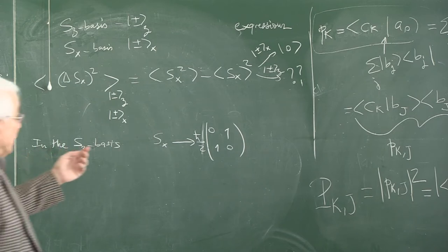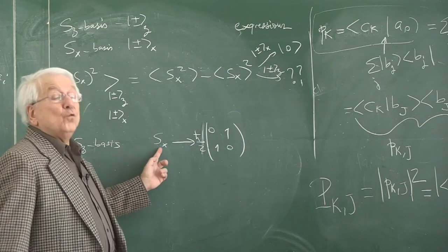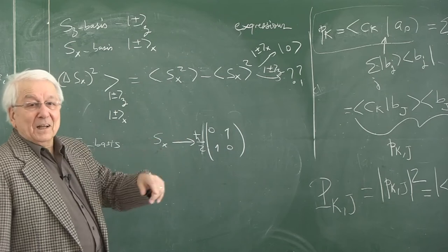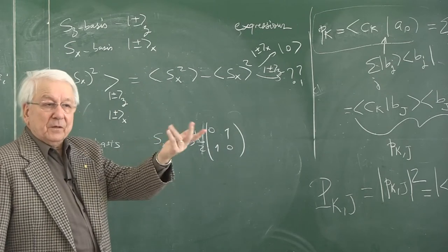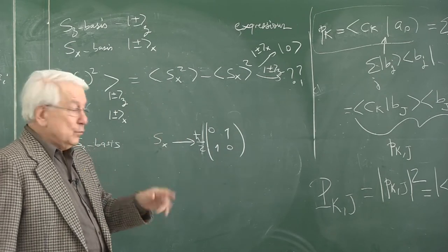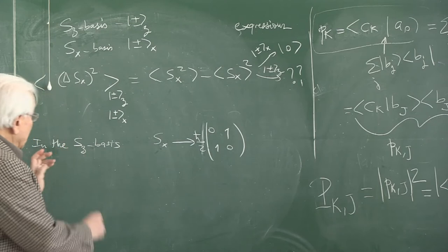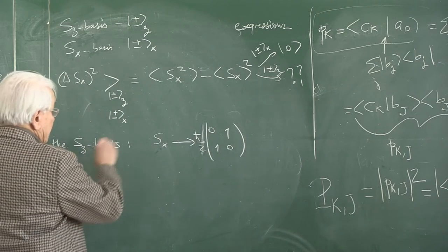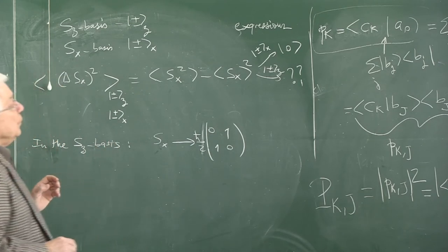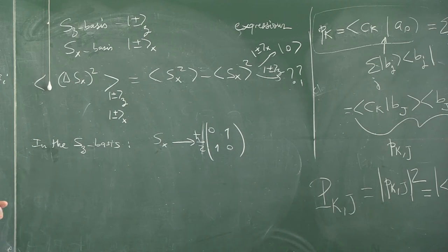What would be the form of Sx in its own basis? It would be diagonal: one and one on the diagonal — ℏ/2 and minus ℏ/2. This is in that basis, so it is more convenient to write it in that basis.